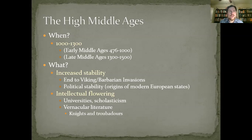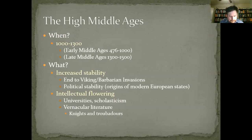Think about our Frankish kingdoms — Clovis or Charlemagne's son Louis the Pious — how these kings were always breaking up their kingdoms and dividing them for their sons. We're not going to see that anymore. We see good, stable, long-lasting kingdoms develop instead. The states that emerge in the high middle ages will be the ancestors of many modern European states. This is when we can really talk about a kingdom of England and a kingdom of France.